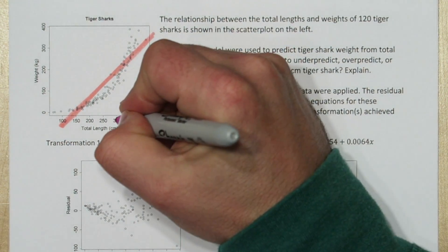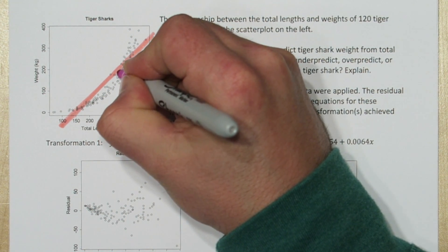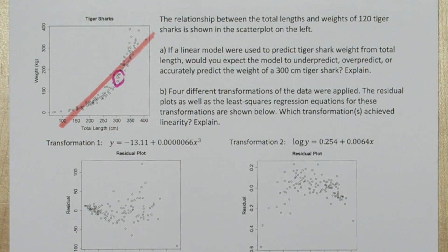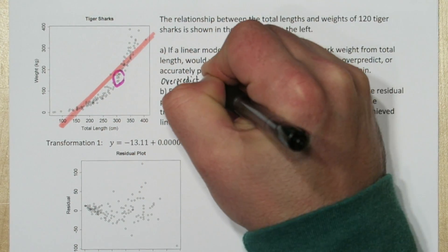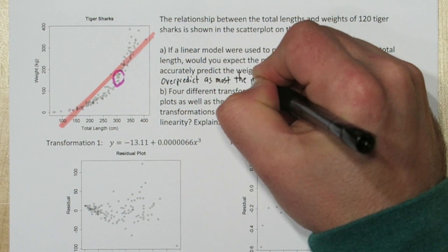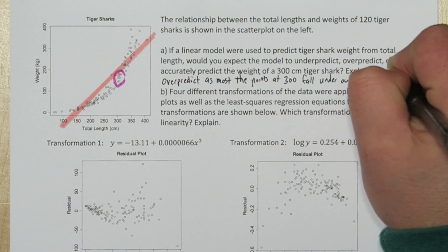Now at 300 centimeters, all the actual sharks appear to be under the model line I just drew. That means the model would over-predict their weight. So we'll say over-predict, as most of the points at 300 fall under our model line.